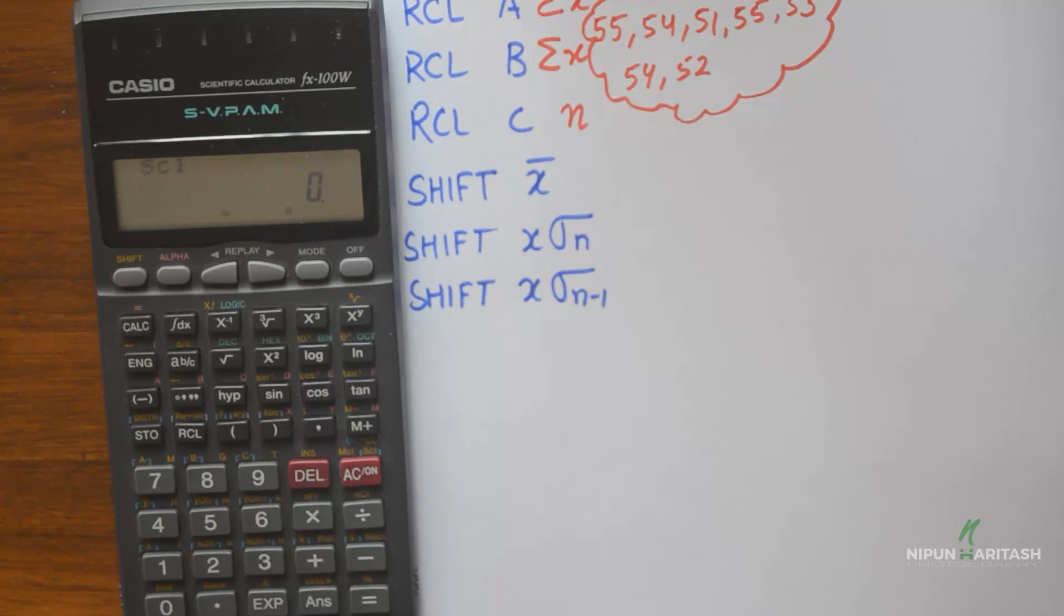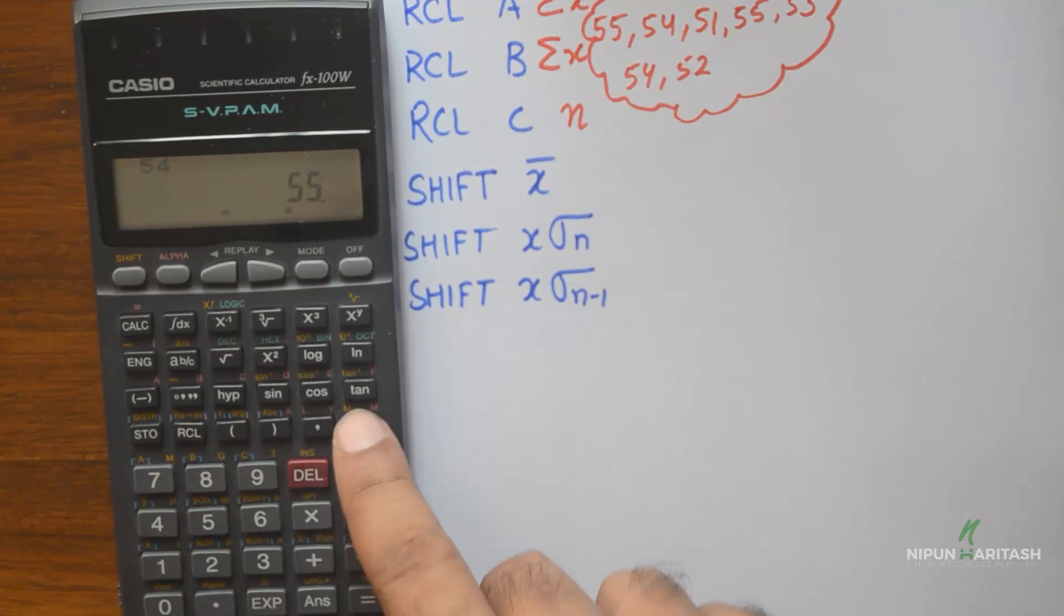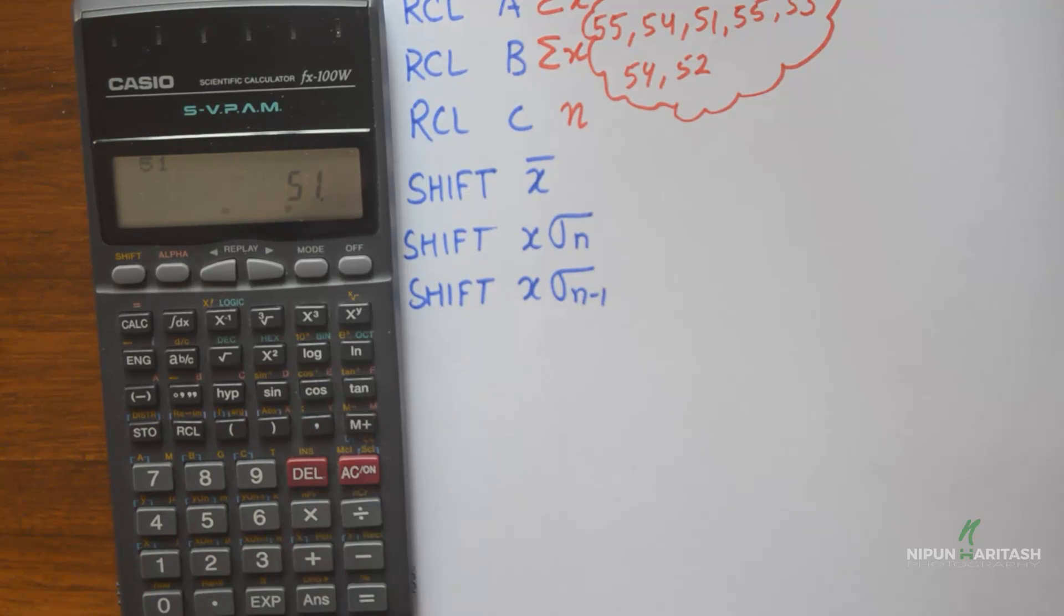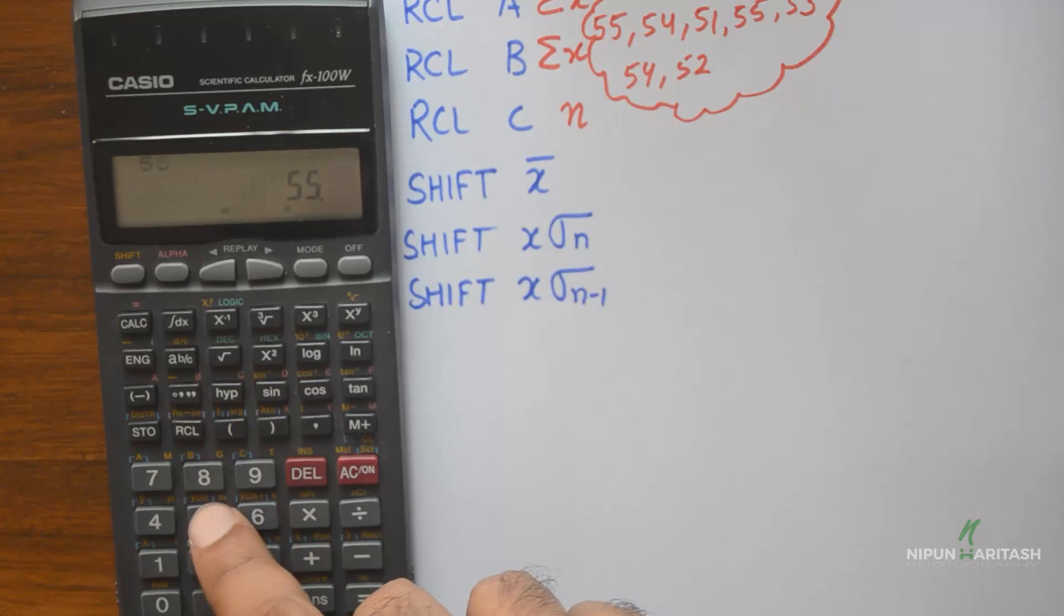Let's start entering the values. I enter 55 as my first value and then press DT, which is right under M plus. Then I enter 54, press DT. I enter 51, DT, 55, DT, 53, DT.